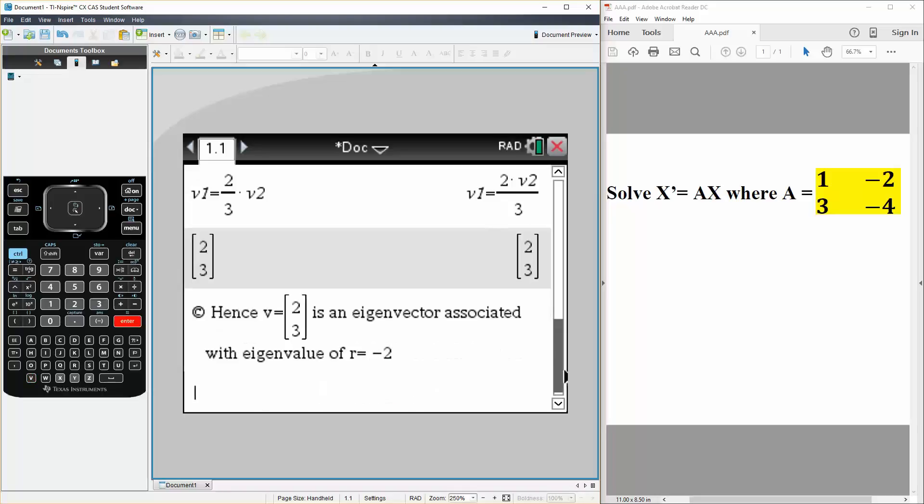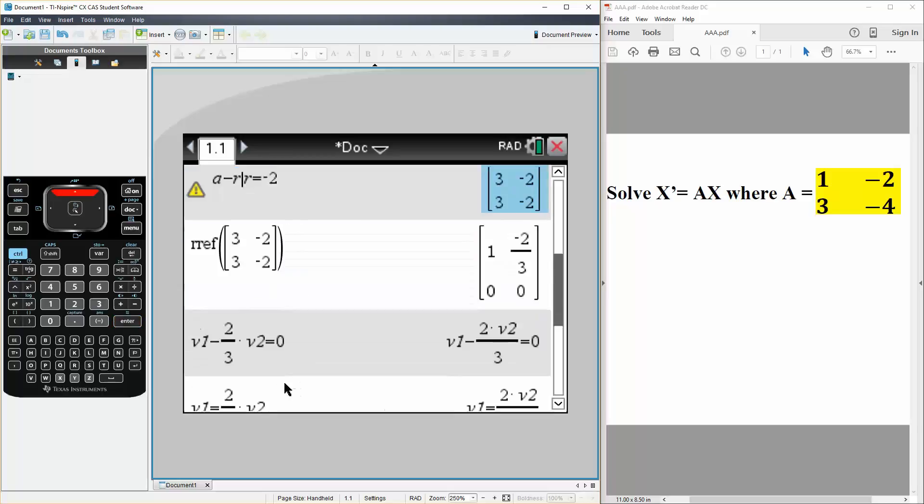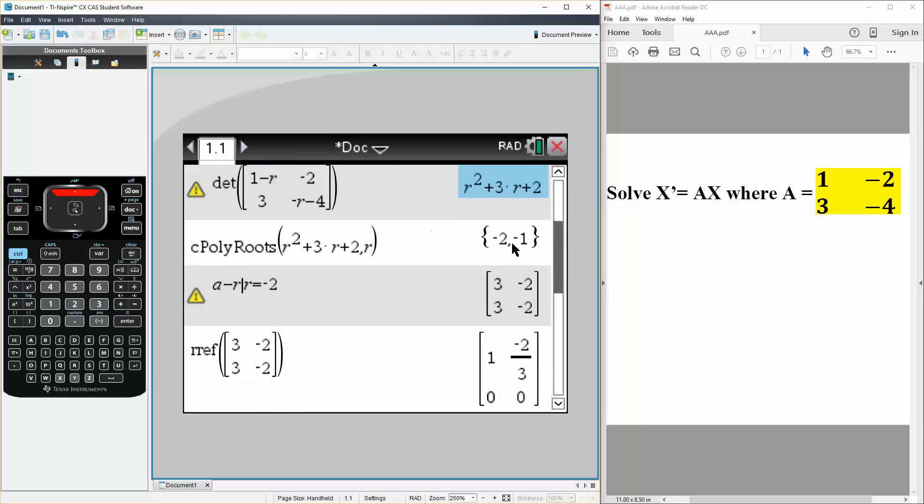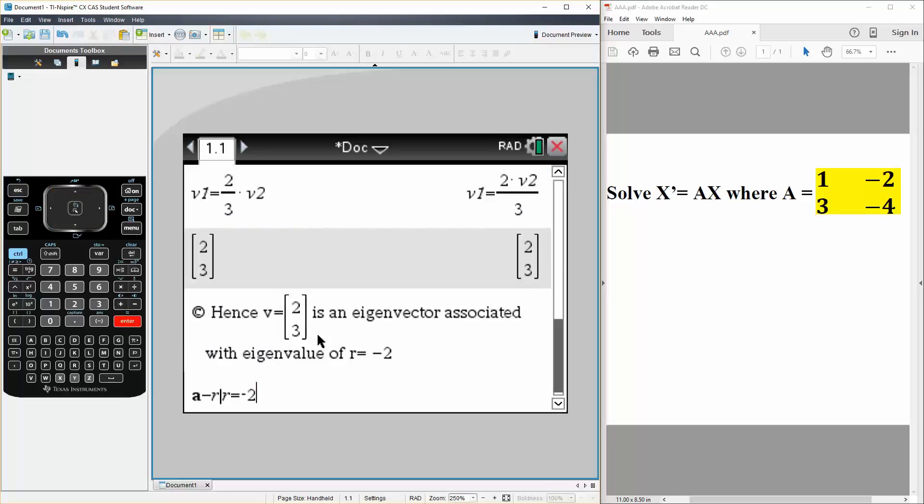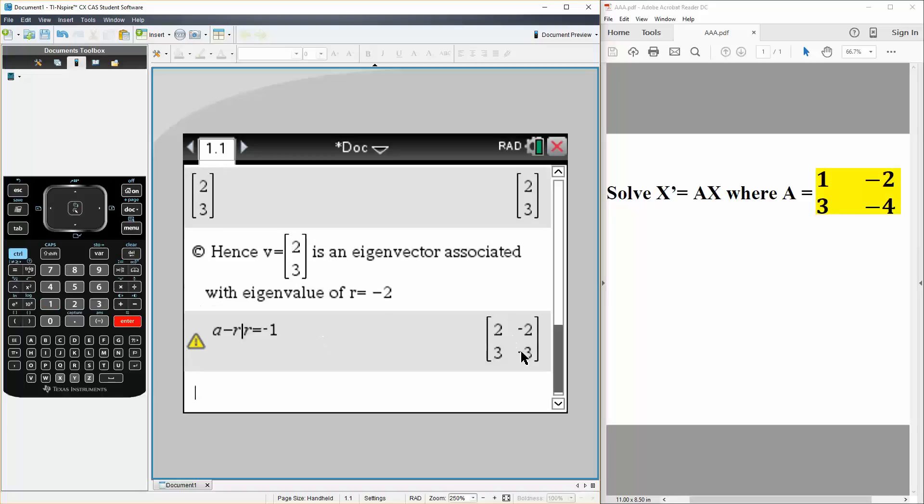And so the next thing that we're going to do is do the other eigenvalue. So let's scroll up to remember, so the other eigenvalue was negative 1. So we do the exact same thing. Instead of plugging negative 2, we plug in negative 1, and this is what we get.